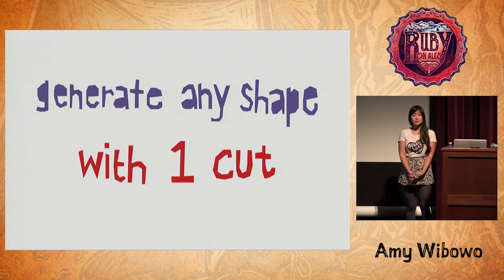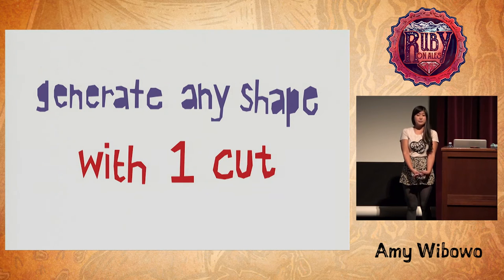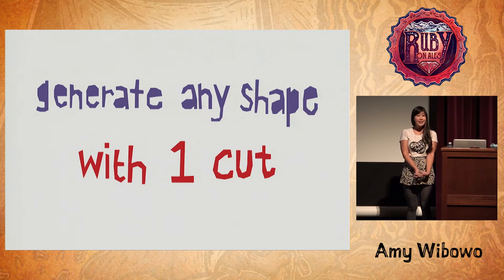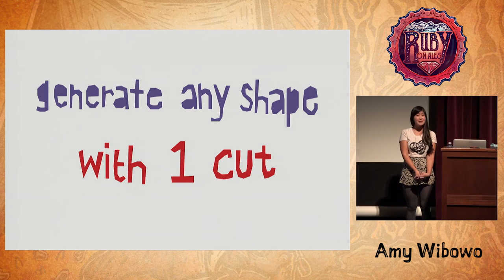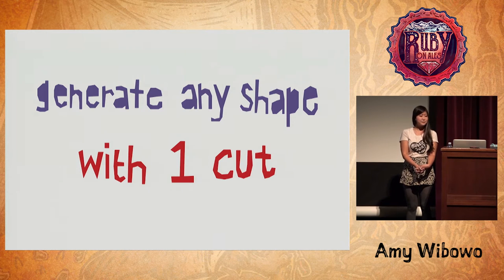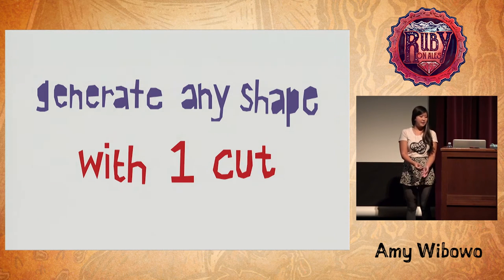It's called the fold and cut theorem, and it states that you can generate any polygonal shape from a single piece of paper with just one cut. That's a really big claim, but it was proved by the professor who taught the class along with Martin Demaine of MIT and Professor Anna Lubiw of the University of Waterloo.